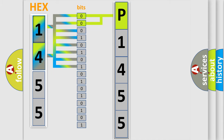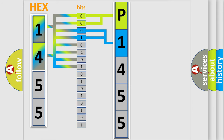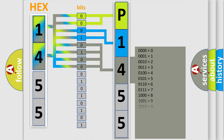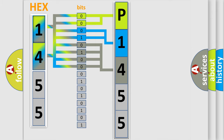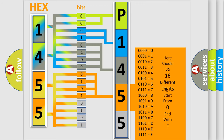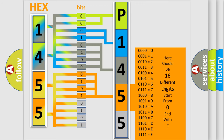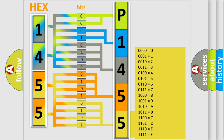The next two bits determine the second character. The last bits of the first byte define the third character of the code. The second byte is composed of a combination of eight bits. The first four bits determine the fourth character of the code, and the combination of the last four bits defines the fifth character. A single byte conceals 256 possible combinations.